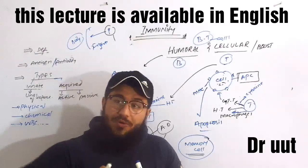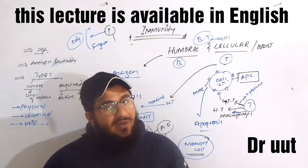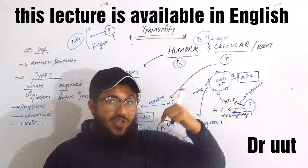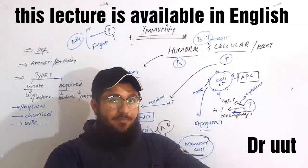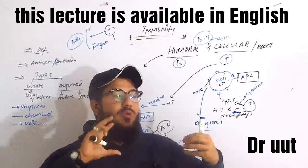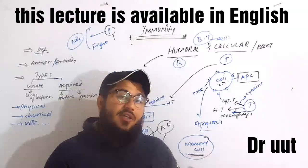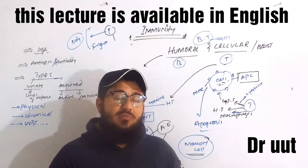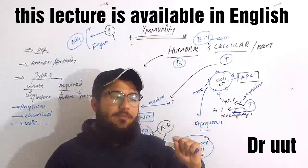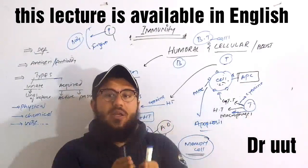Sometimes after the immune response, memory B and T cells are created. If antibodies are already available from a previous exposure and a new antigen of the same type enters, the body mounts a secondary immune response. Because an army of memory cells is already present, the antibodies are rapidly available, allowing a faster and stronger response.